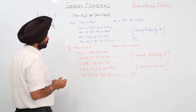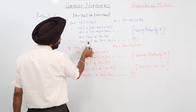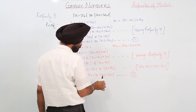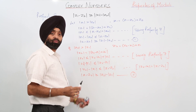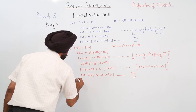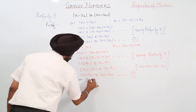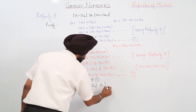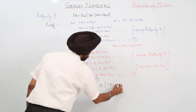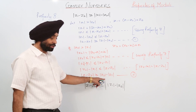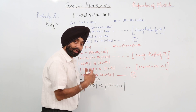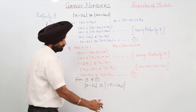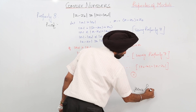Now check equations 1 and 2. Equation 1 says the modulus of (z1 - z2) is greater than or equal to the modulus of z1 minus the modulus of z2. Equation 2 says the modulus of (z1 - z2) is greater than or equal to the modulus of z2 minus the modulus of z1. Combining equations 1 and 2, the modulus of (z1 - z2) is greater than or equal to the absolute value of the modulus of z1 minus the modulus of z2. Hence proved.